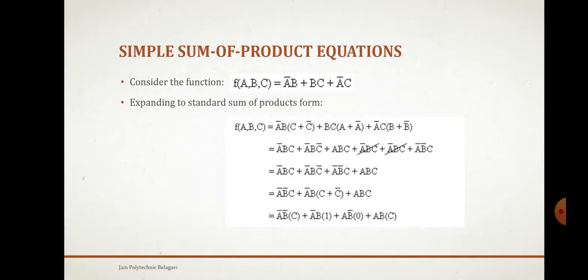A bar bc I will write one side. Next a bar b I am going to take common from first and second term. I will get c plus c bar plus abc. c plus c bar equals one, so a bar b plus abc. I am going to write a b bar into zero plus abc, that is the expanded form.